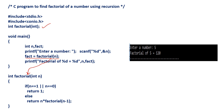In the factorial function, there is a base condition. What is the base condition? If n value is equal to 1 or n value is equal to 0, then we are returning 1 to the calling function. Otherwise, we are performing a recursive function call: n into factorial(n-1).